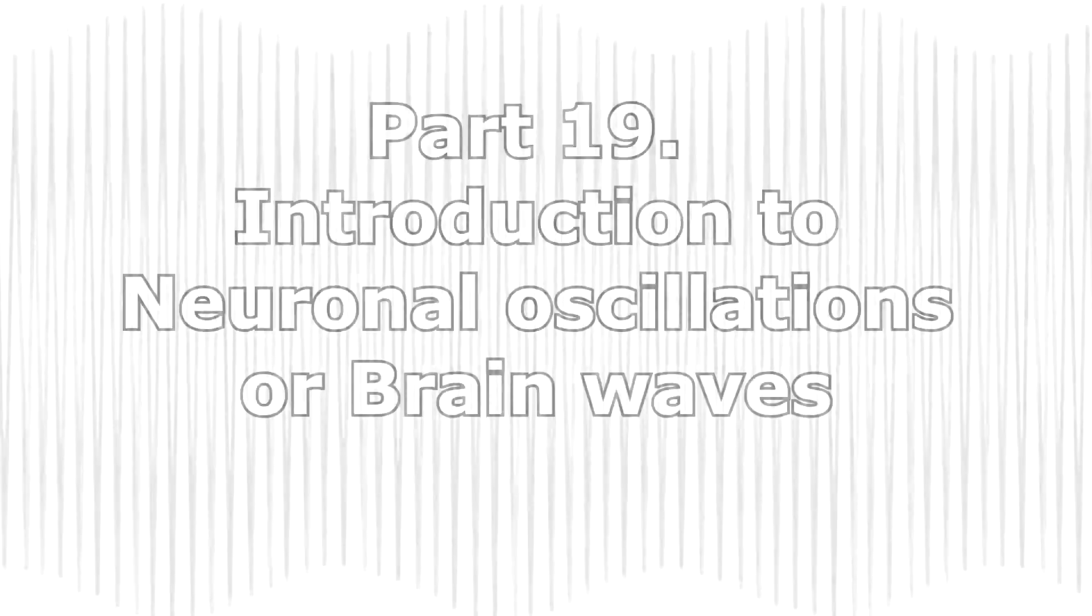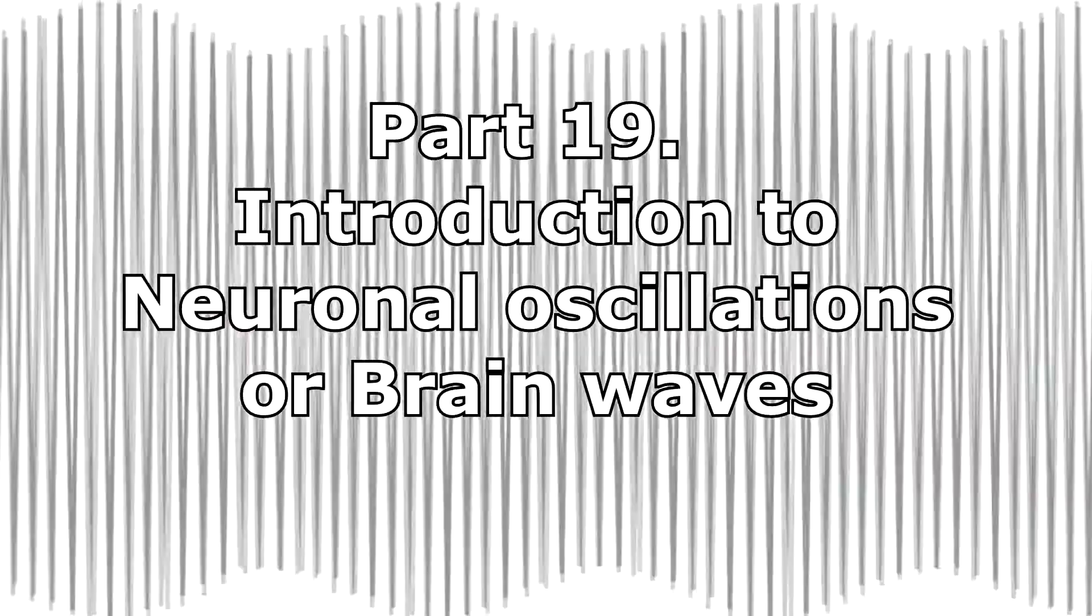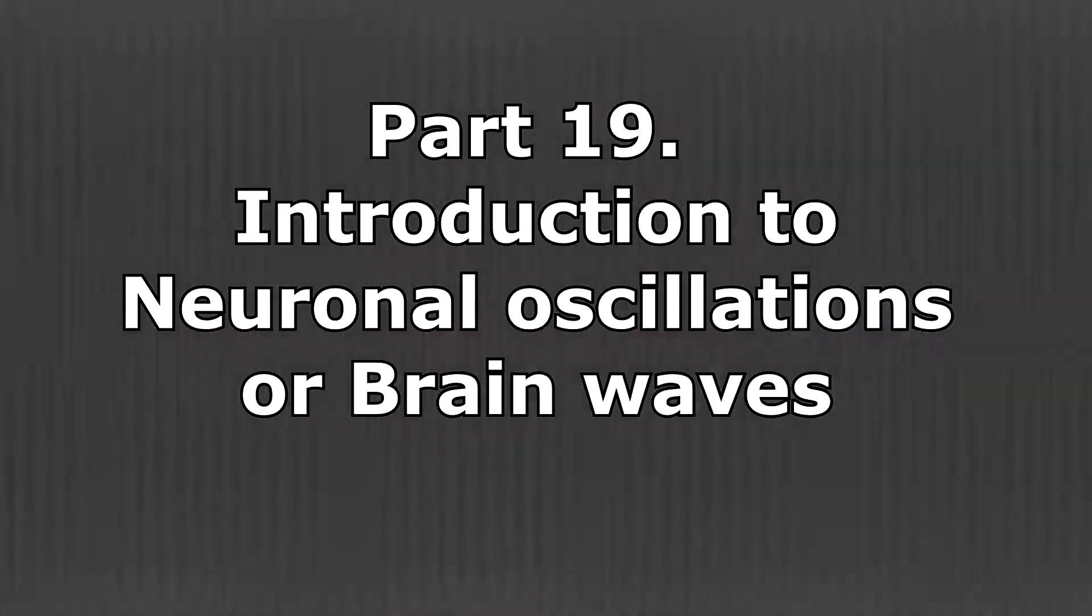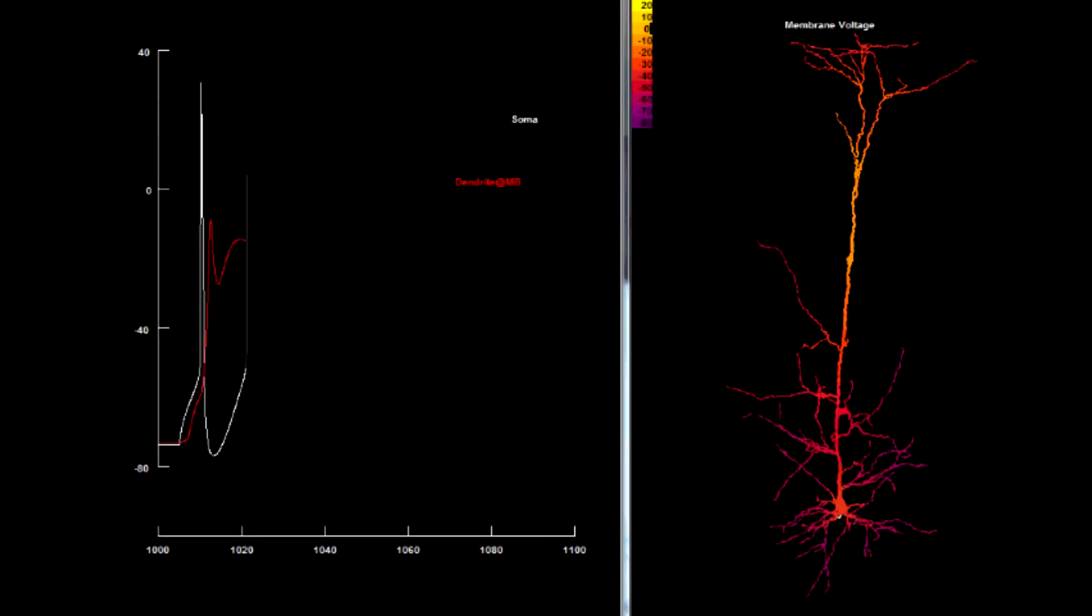Learning with the Illuminati, Part 19: Introduction to Neuronal Oscillations or Brain Waves. Neuronal oscillations can be caused either by individual neurons or by groups of neurons which interact.